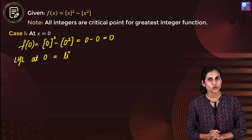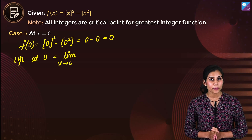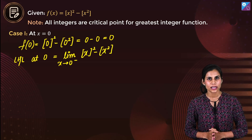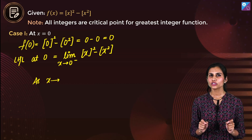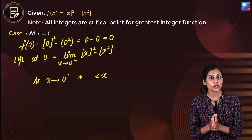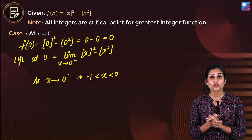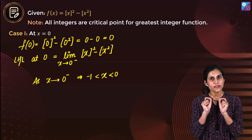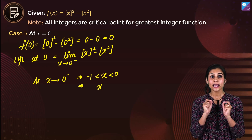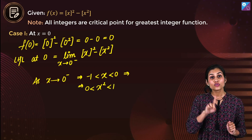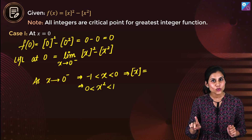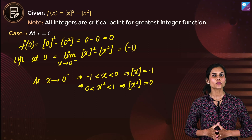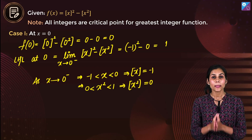The left hand limit at 0 will be: limit x tends to 0 from the negative side of GIF(x) whole squared minus GIF(x²). If x is approaching 0 from the left, it is very close to 0 but less than 0 — strictly sandwiched between −1 and 0. So x² will lie between 0 and 1, meaning GIF(x) = −1 but GIF(x²) = 0. So the left hand limit comes out to be (−1)² − 0, that is 1.